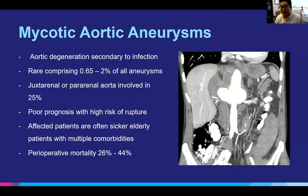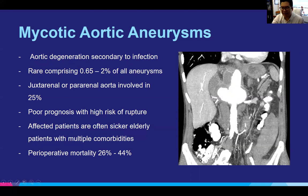Mycotic aortic aneurysms are different beasts from degenerative aneurysms. Aortic degeneration is caused secondary to infection that eats away at the actual structure of the aortic wall, causing it to enlarge in a pretty quick and dangerous fashion. They're pretty rare, comprising only about 0.65 to 2% of all aneurysms. The juxtarenal or pararenal aorta is involved frequently, quoted at 25%. They have very poor prognosis with high risk of rupture, affecting often sicker elderly patients with multiple comorbidities. Perioperative mortality is quoted between 26% to 44% in some studies.